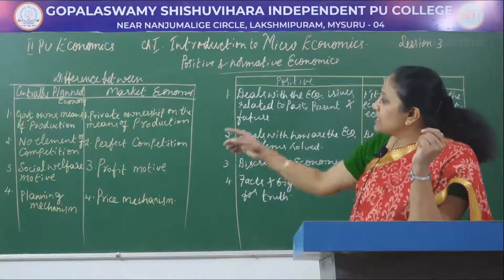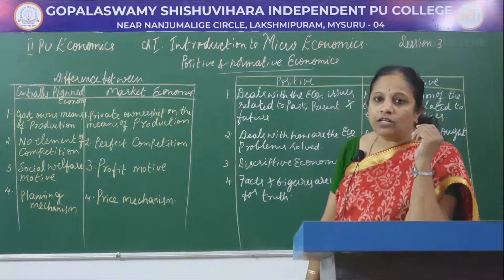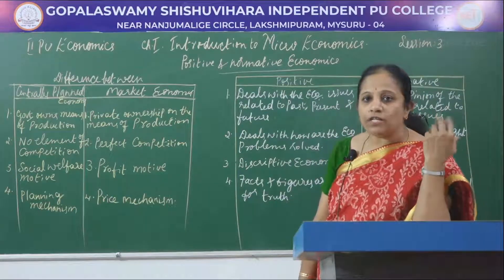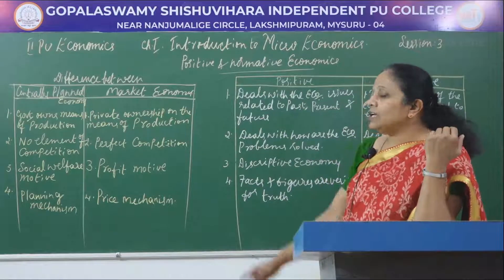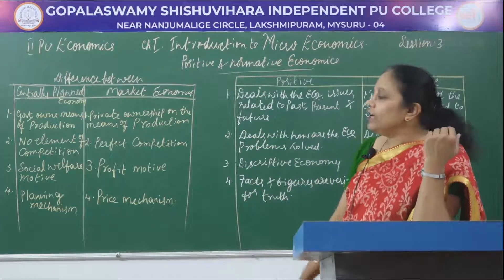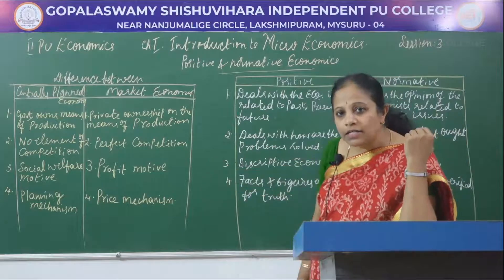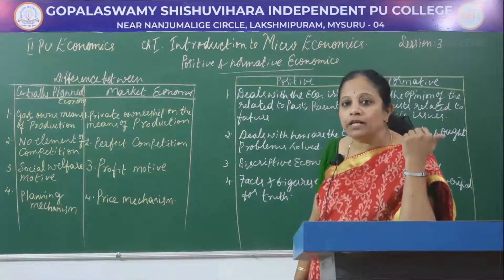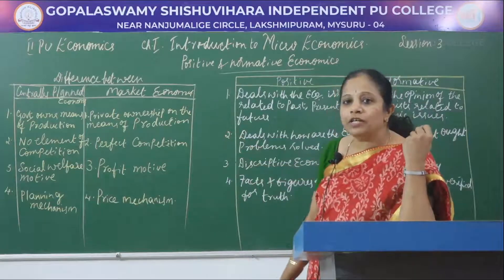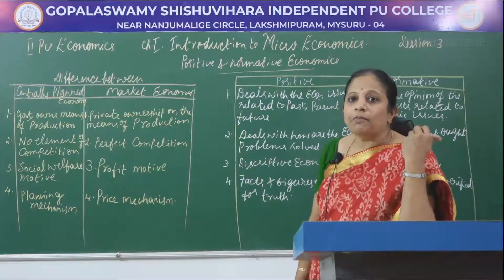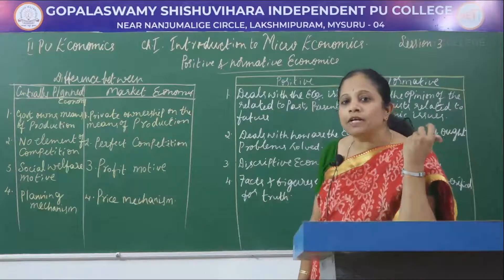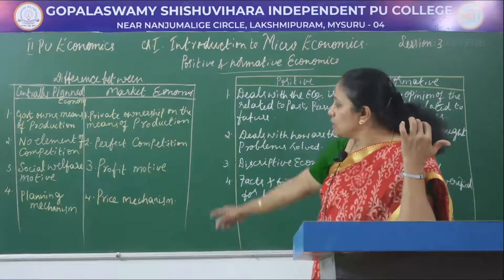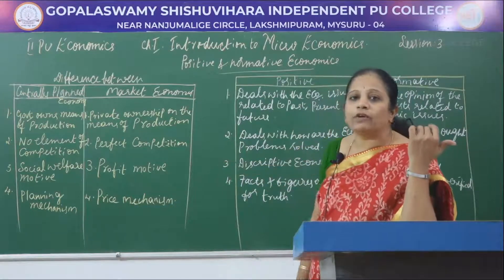The second difference is the element of competition. In the case of a government economy, there is no element of competition at all because it operates for social welfare. But in the case of market economy, there exists perfect competition in many cases. Perfect competition is the style of market economy and every individual investor wishes to earn more profit, so the profit motive exists here.